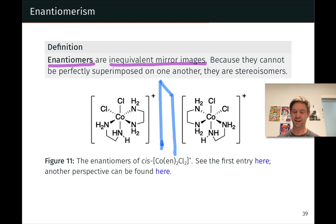Where this gets a little tricky is verifying that these are not the same. These are not actually perfectly superimposable. If you tried, for example, to turn over this molecule to line up these two ethylenediamine ligands, that would lead to the chlorides not lining up properly or the other ethylenediamine ligand not lining up properly.